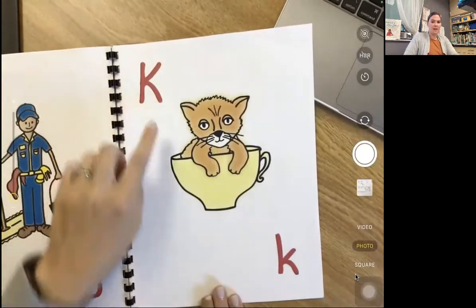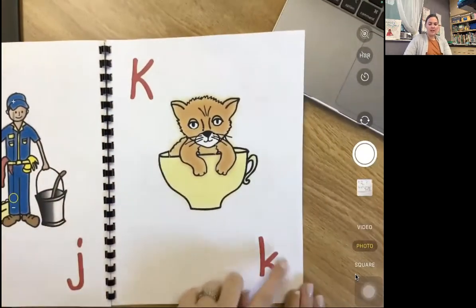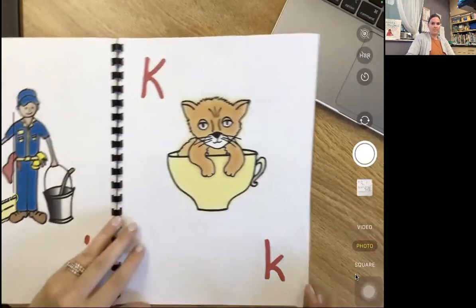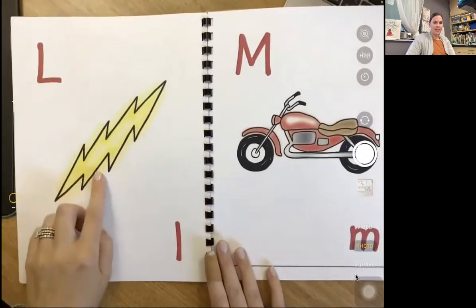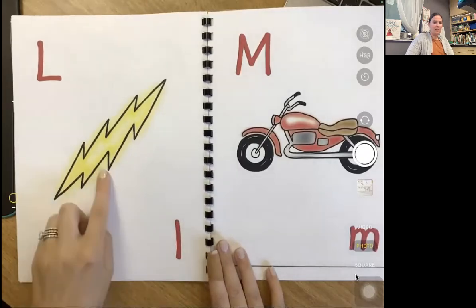K, cuh, kitten. K, cuh, kitten. L, L, lightning. L, L, lightning.